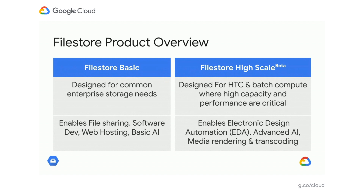We make it easy to pick the right FileStore tier for your workload by offering two flavors. First, we have FileStore Basic, which is generally available and has been since April 2019. And we just launched FileStore High Scale to beta in June. FileStore Basic is optimized for enterprise workloads that don't have large capacity and performance demands, but they do require enterprise-class reliability, whereas High Scale is optimized for use when performance and scalability are really critical to your applications. You may be aware that last August we acquired a company called Elastifile. High Scale is our first FileStore product built by the integrated team, and it's based on the Elastifile file system.